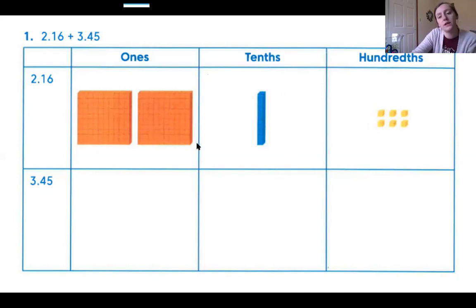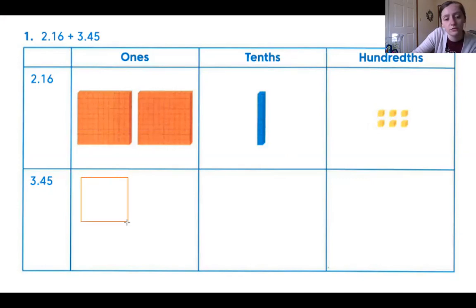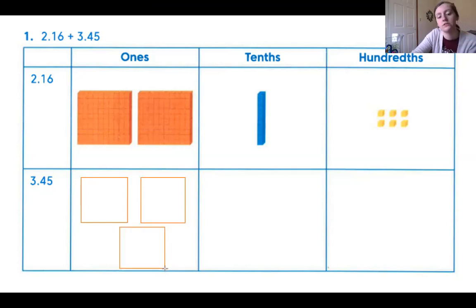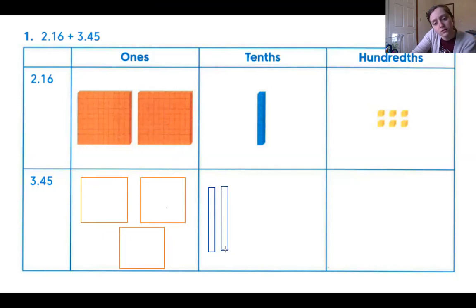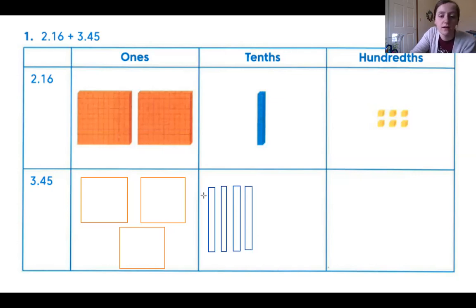I'm going to stick with the same colors to make it easier to follow. So for three and forty-five hundredths, this three tells me I need three of the flats, because they represent three wholes. I'm not going to take the time to divide each one into a hundred little squares — you don't have to either — as long as your drawing shows what you mean. Now for the four tenths, I need to draw four of these rods or longs: one, two, three, four. If yours aren't exactly perfect, that's okay.